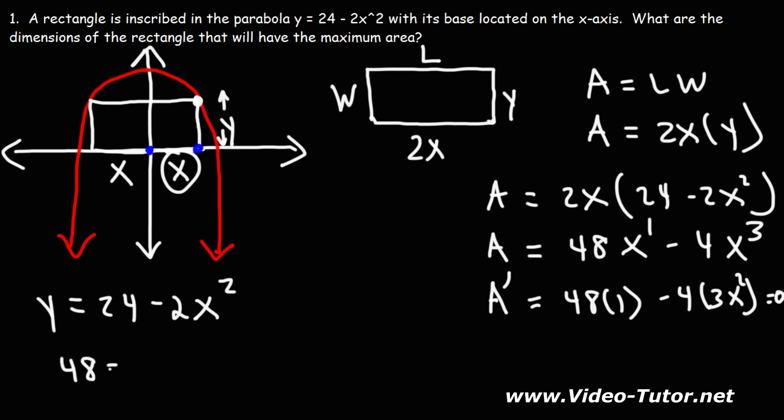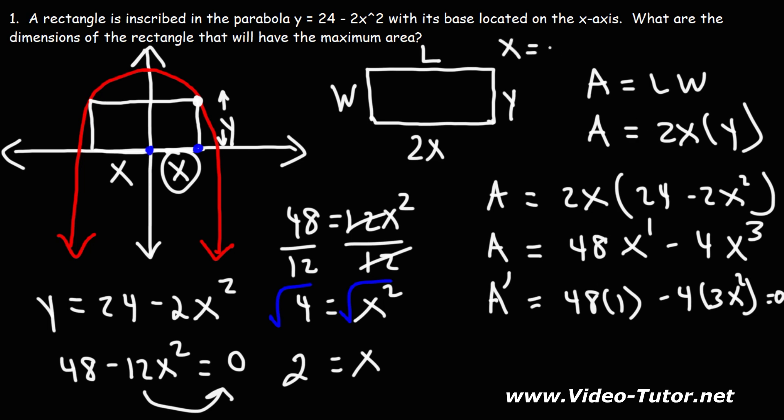Right now we have 48 minus 12x squared equals 0. I'm going to take this and move it to this side. So this is going to give me 48 equals 12x squared. Divided by 12. 48 divided by 12 is 4. So we get 4 equals x squared. Taking the square root of both sides, we get that x is going to be plus or minus 2. But since we're dealing with the area of a rectangle, we could use positive values. So we get that x equals 2.